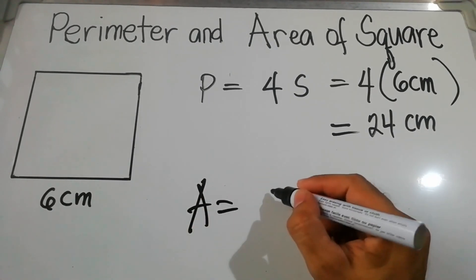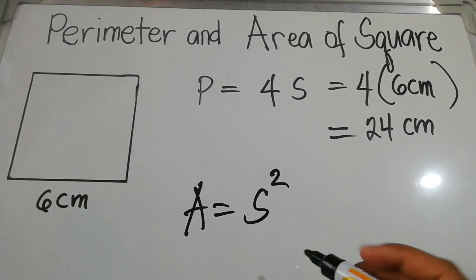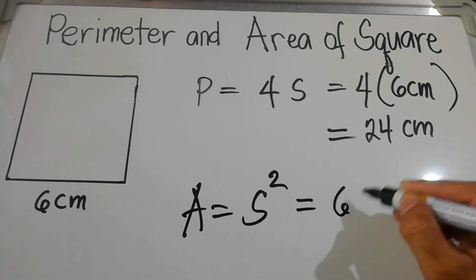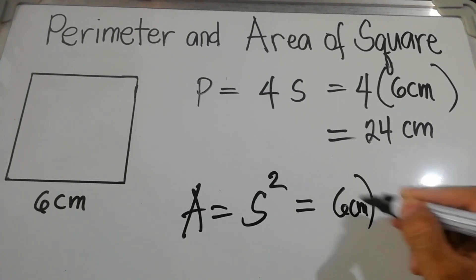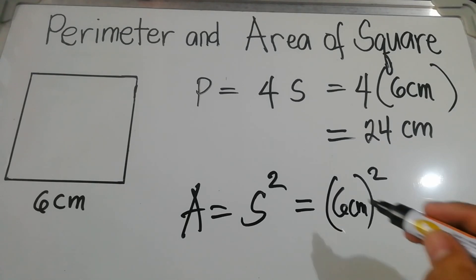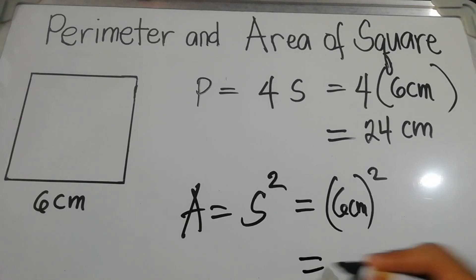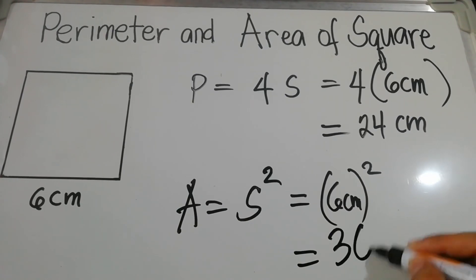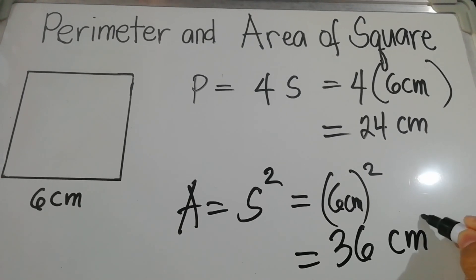The perimeter equals 4 times 6, which is 24 centimeters. For the area of the square, area = s squared, which is 6 centimeters squared. So 6 times 6 equals 36 square centimeters.